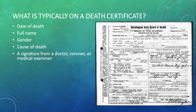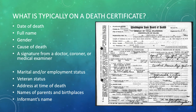What do you typically find on a death certificate? You're going to find the date of death, their full name, the cause of death, and it's going to be signed by a doctor, coroner, or medical examiner. If you're really lucky, you might also get information on their marital or employment status, if they were a veteran, the address at the time of their death, which could be a hospital or their home. You might also get the parents' names and birthplaces. And it's usually also signed by an informant — hopefully a family member.